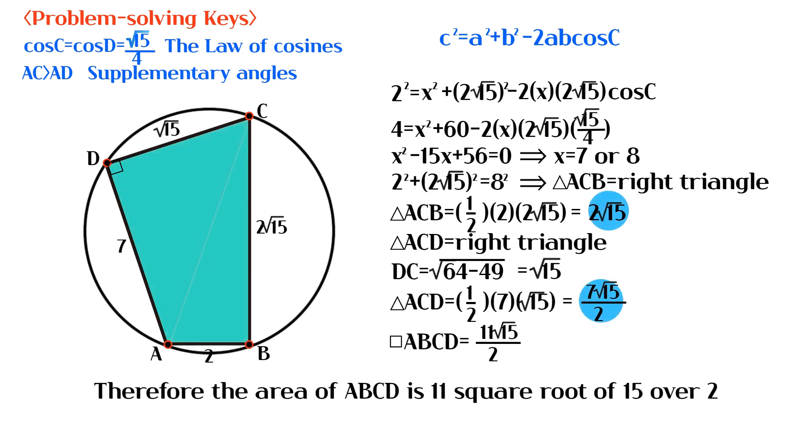Therefore the area of ABCD is 11 square root of 15 over 2.